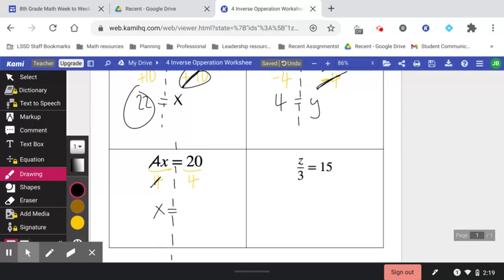So all I have to do is divide the other side by 4 and I'm done. 20 divided by 4 is 5. And so my answer is 5.